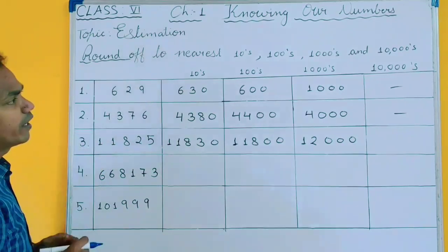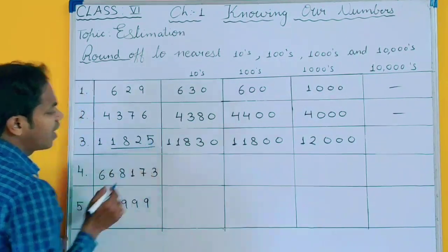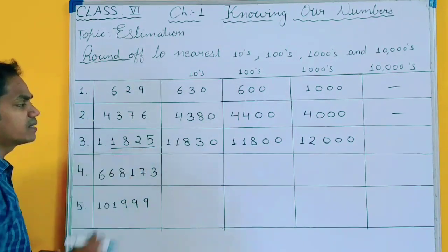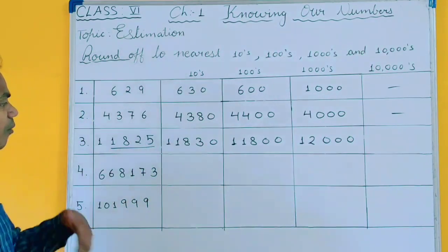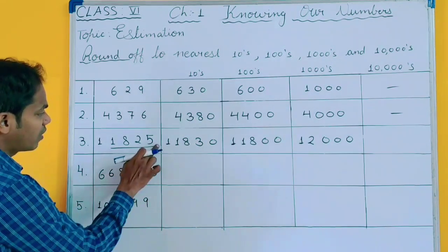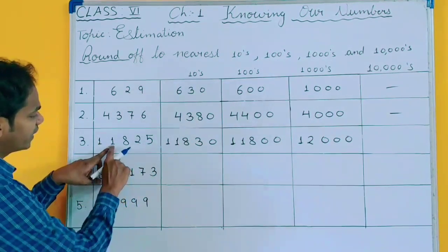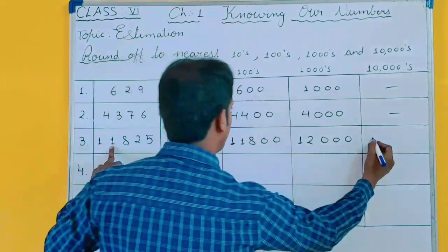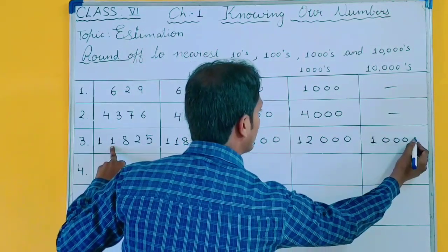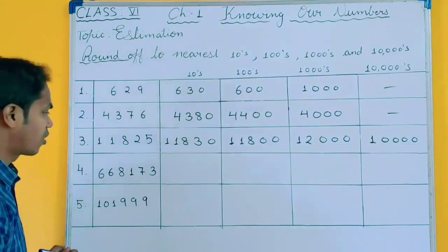For rounding off to 10,000, you will check the last four values; it must be 5000 or more than 5000. This is less than 5000, so the result is 10,000.